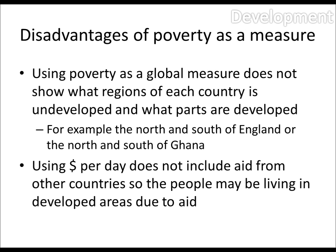However, there are some disadvantages. First, using poverty as a global measure — like colour-coded on a map — doesn't show what regions of each country are undeveloped; it's just an average. For example, the north and south of England, or the north and south of Ghana. Also, using dollars per day does not include aid from other countries, so people might be living in perfectly developed areas due to aid, but they appear to be undeveloped because they are in poverty.